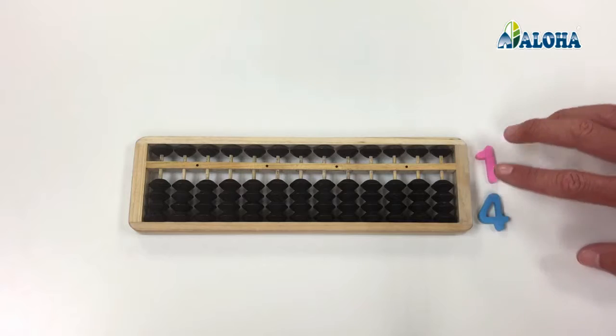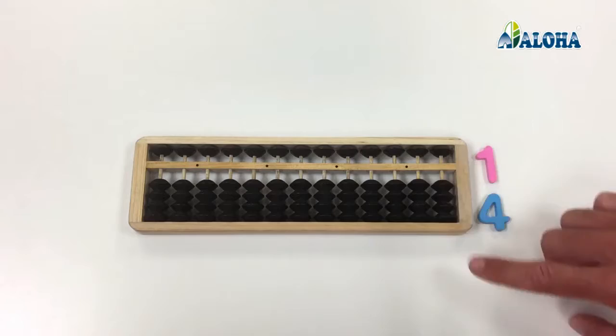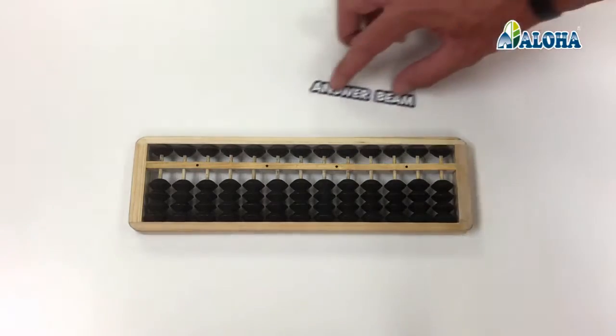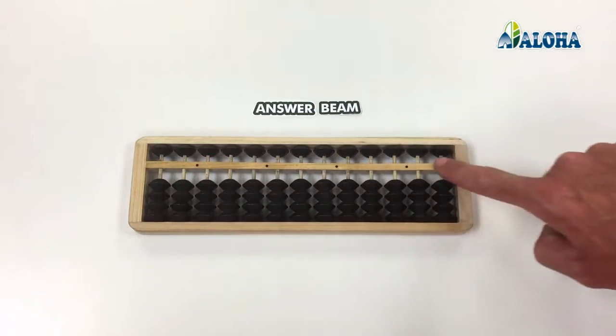On each column, there is an upper bead and four lower beads. The lower beads are separated from the upper bead by a bar called the answer beam. Only the beads that touch the answer beam are part of the result.